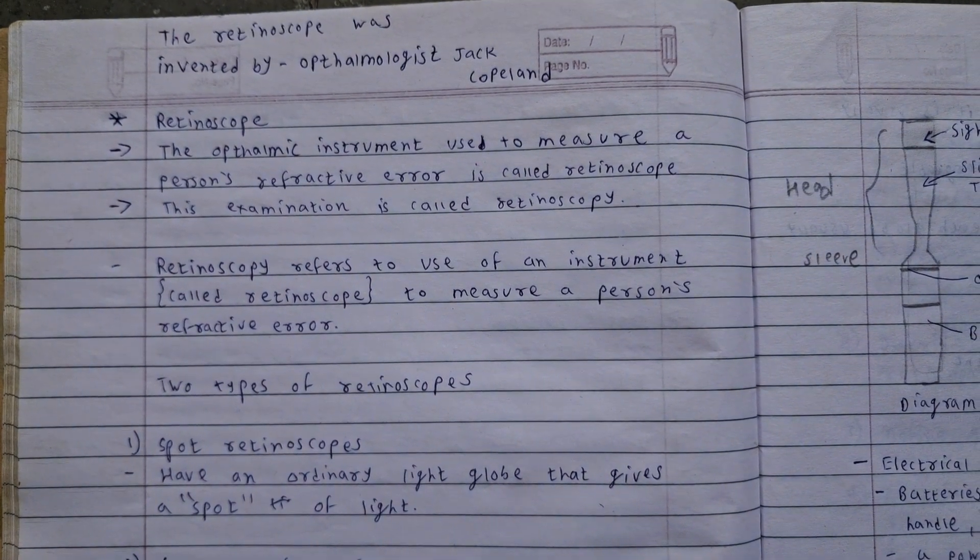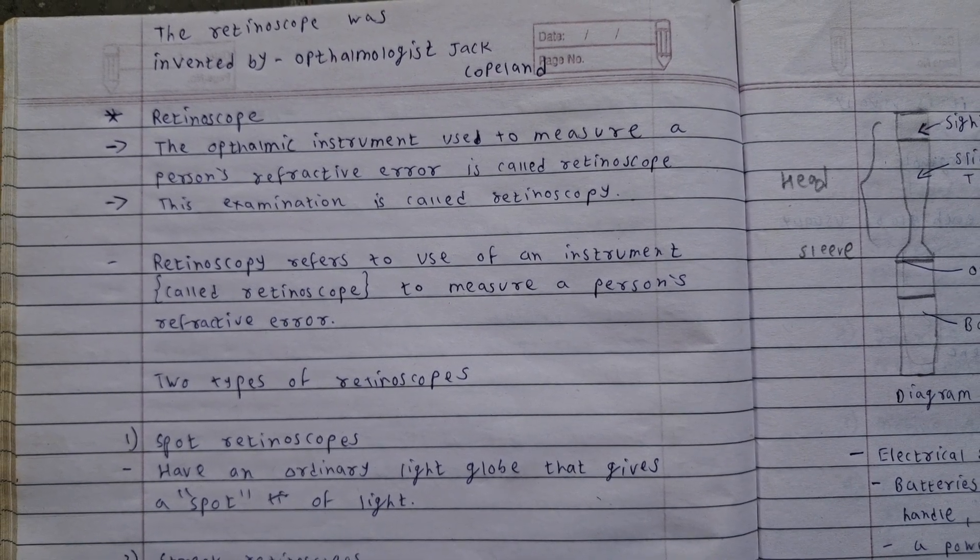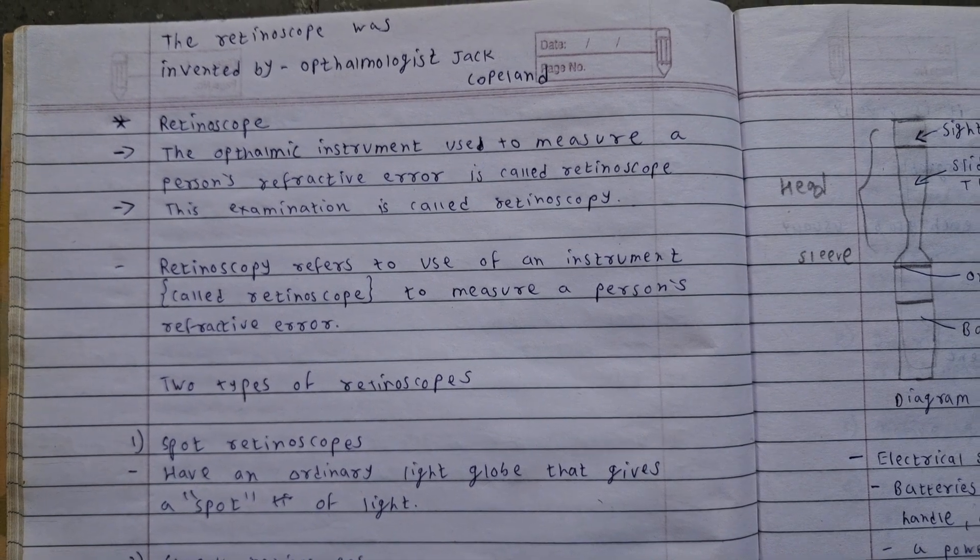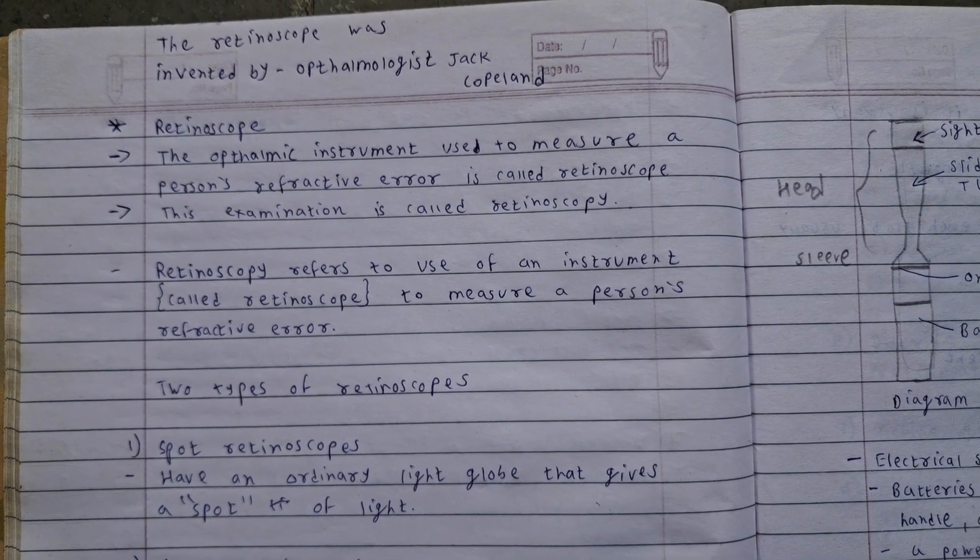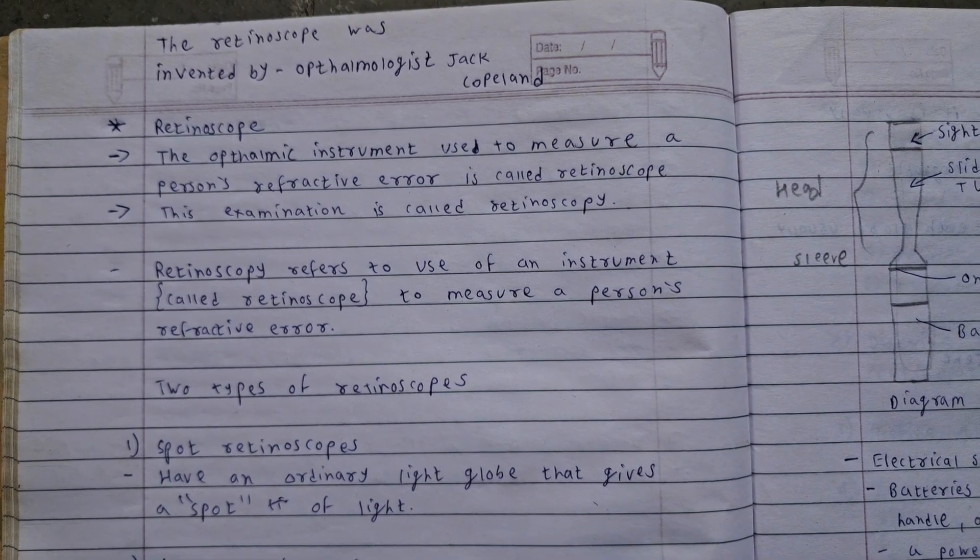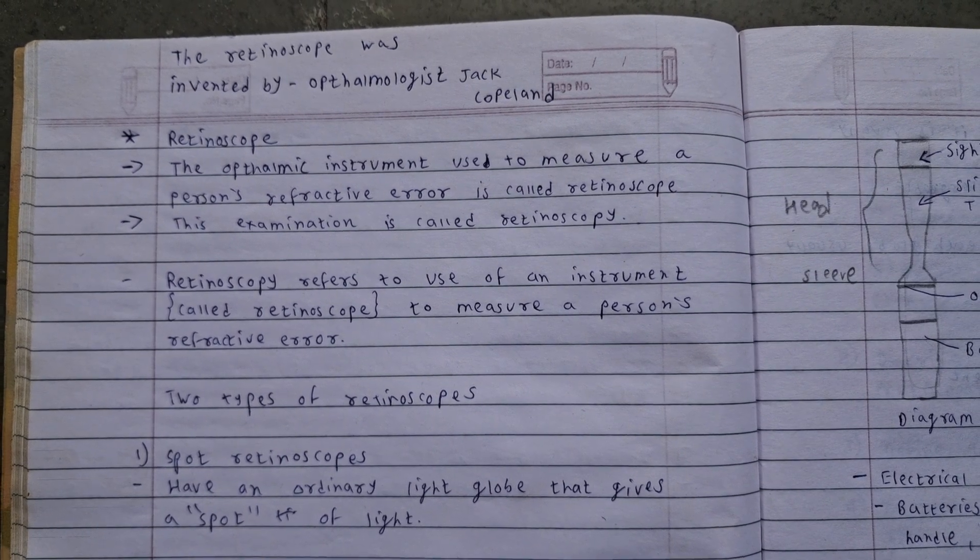Retinoscope. The ophthalmic instrument used to measure a person's refractive error is called retinoscope. Ophthalmic instrument means an instrument that relates to the eye. The retinoscope was invented by ophthalmologist Jack Copland.